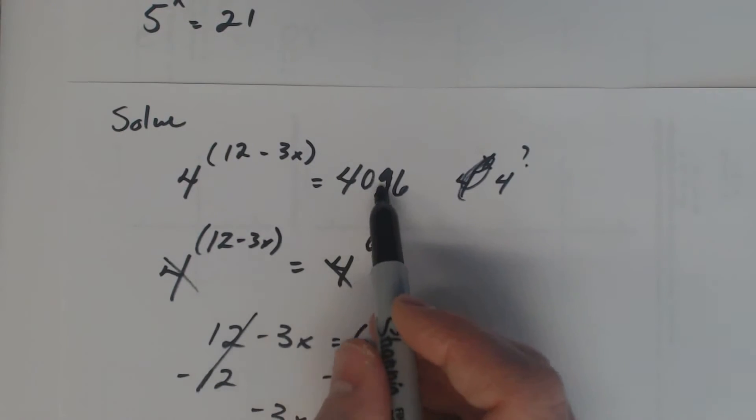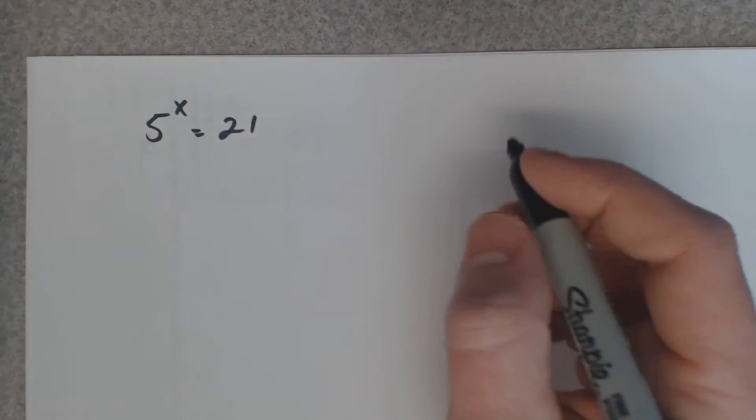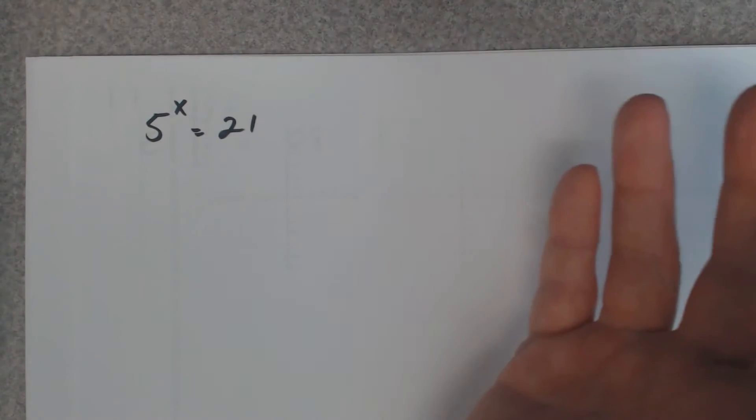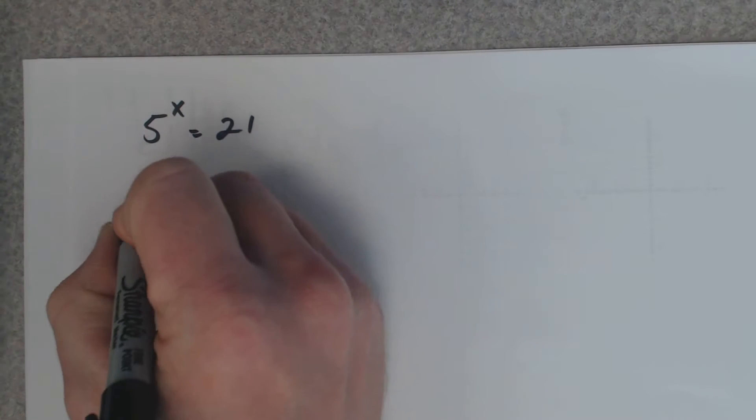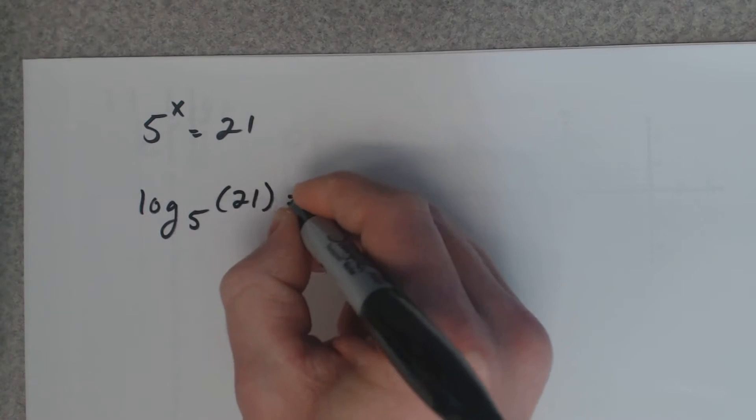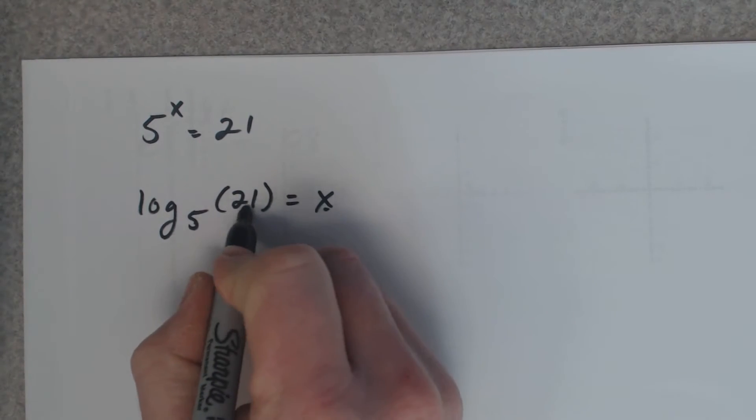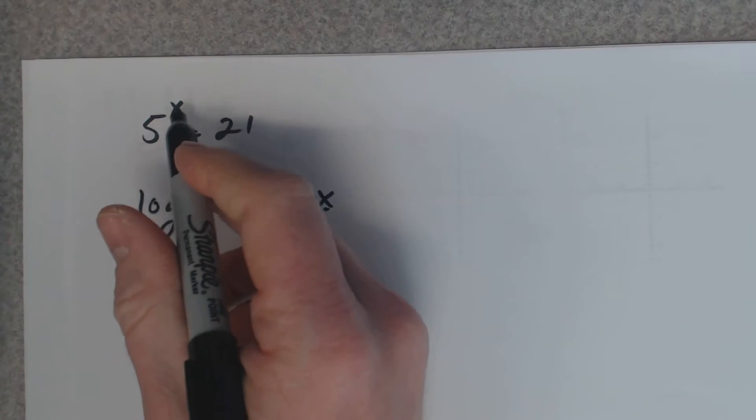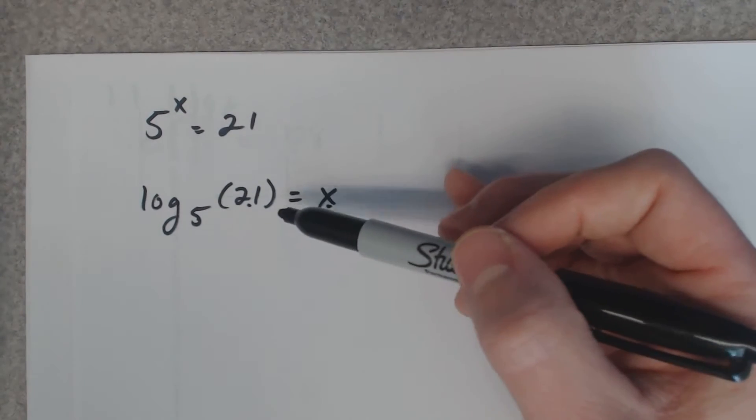So, the trick to that was make sure you can get the same base on both sides. Now, some of them you can't get that. You just can't get it. You can't get that to the same base. Five to some power equals twenty-one? There's no way. So, what you can do, I'm going to rewrite this as a logarithm. Five to some power gives me twenty-one. That's what this is. This is the exponential form. It's the logarithmic form.